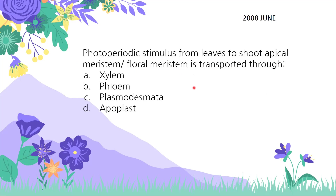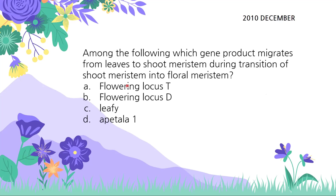Next question: the photoperiodic stimulus from leaves to shoot apical meristem is transported through — that's a nice question. We know the leaves perceive the signal and it is passed to the shoot apical meristem. The key gene, if you remember from the previous video, is Constans, and it is produced in the companion cells and transported via phloem flow. That is correct.